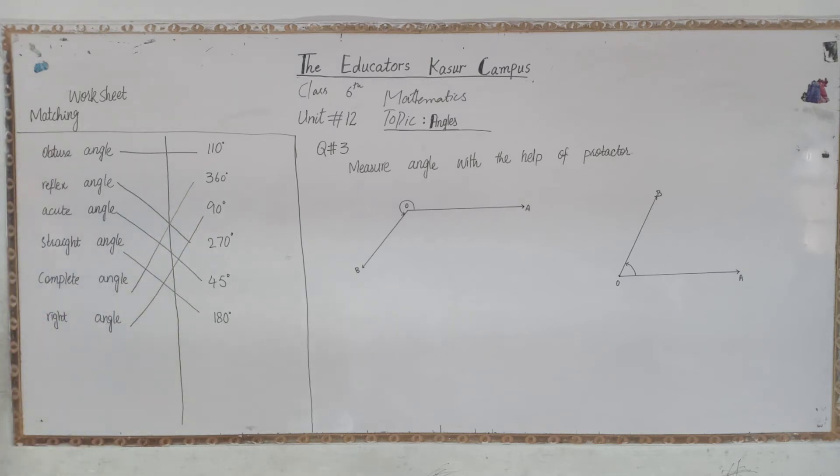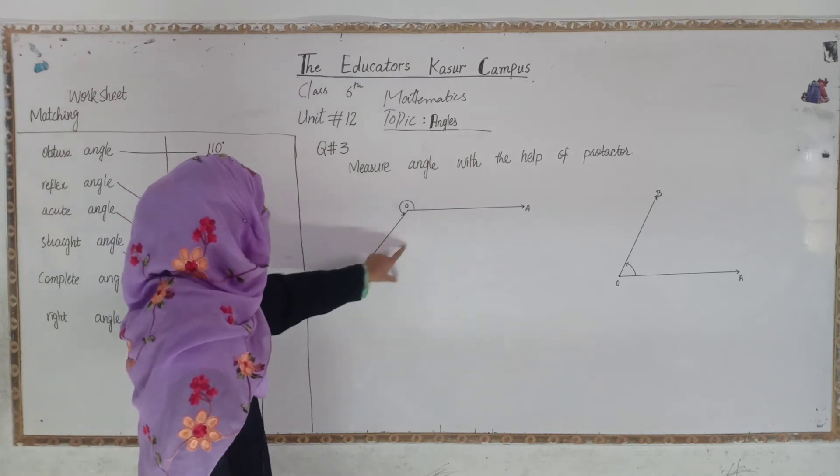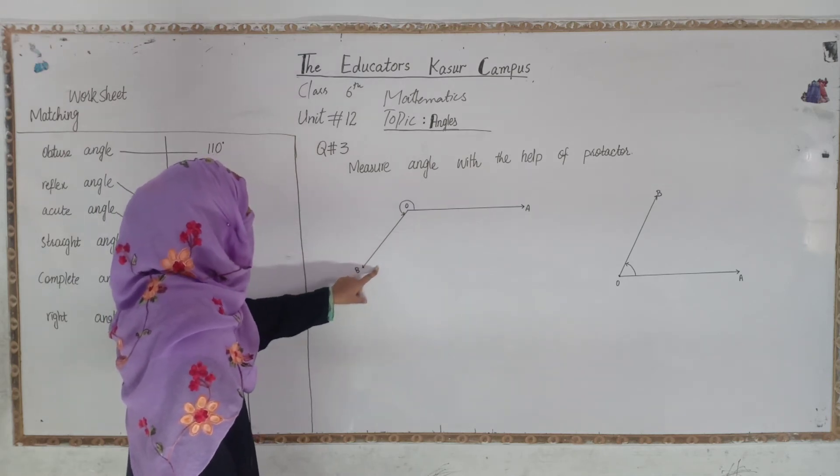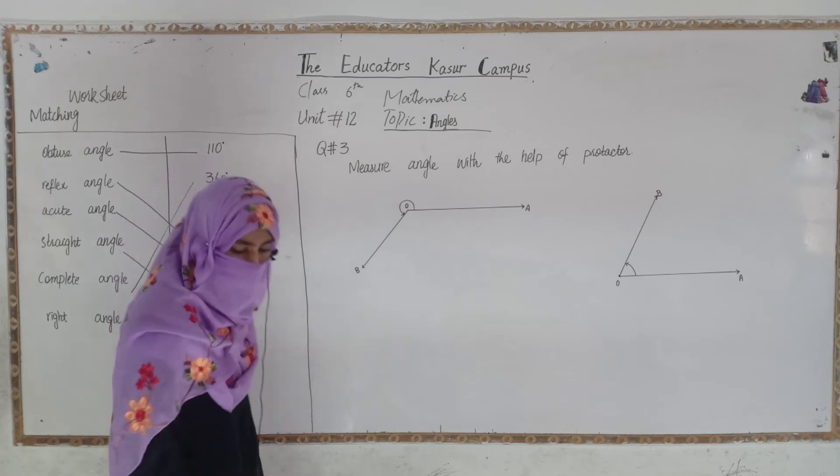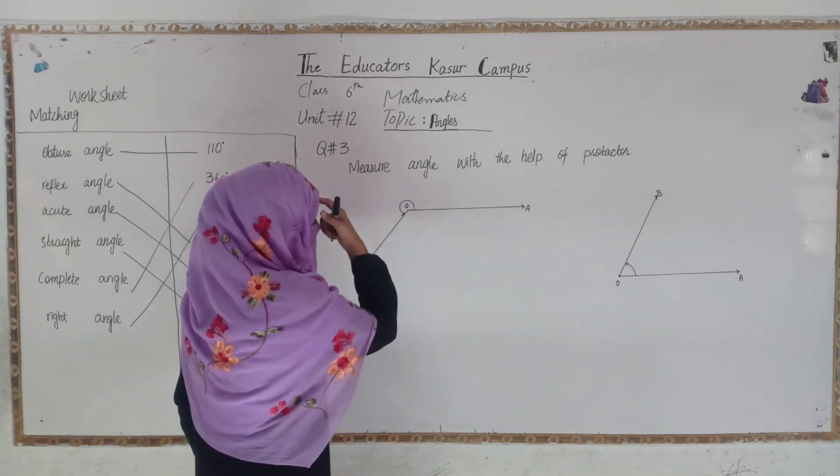Next, question number 3. Students, we have to measure the angle with the help of the protractor. We have drawn some angles, but the measurement will not tell us, which we have to measure from the protractor. The first method is to measure the vertex.